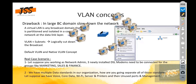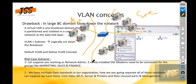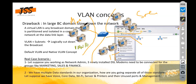For example, consider a switch connected to a marketing department, a sales department, and an IT department. With VLANs, we can segregate them: assign VLAN 10 to marketing, VLAN 30 to sales, and VLAN 50 to IT.